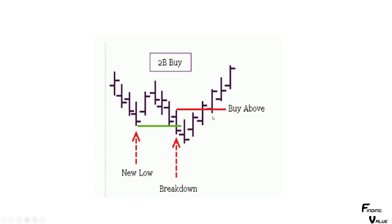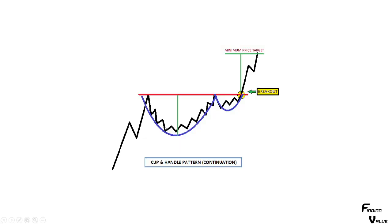Here's a cup and handle pattern - a very prevalent pattern that you see when trading. Usually you have an uptrend, it hits some resistance line, sells off, and creates this big U-shaped pattern. The bigger the U-shaped pattern, the higher it's going to go from the breakout. Then it creates the handle - sometimes it's messy and goes all over the place, but that's the pattern. When they break to the upside, that's typically when you want to buy and hold until it hits the price target, or it's a continuation pattern in a long-term bull market.